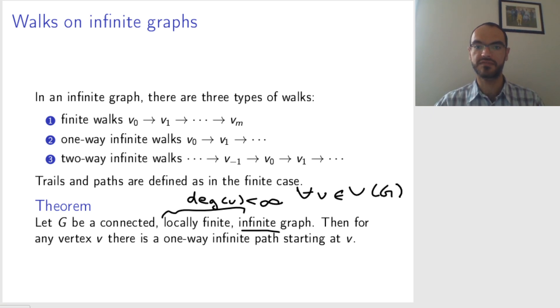If you have such a graph that's locally finite and connected and infinite, then starting from any vertex, you can find a one-way infinite path.